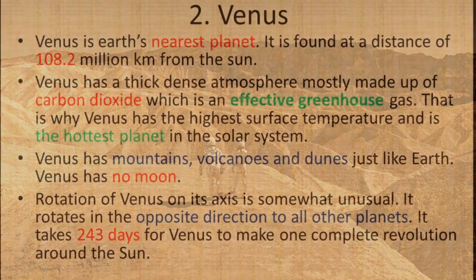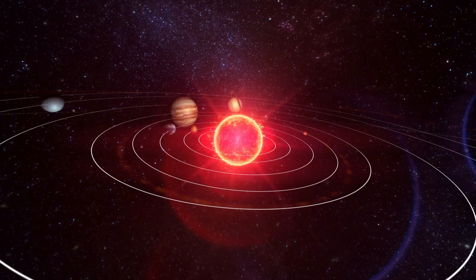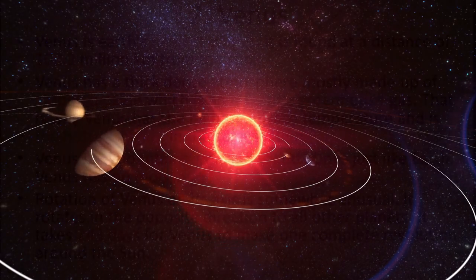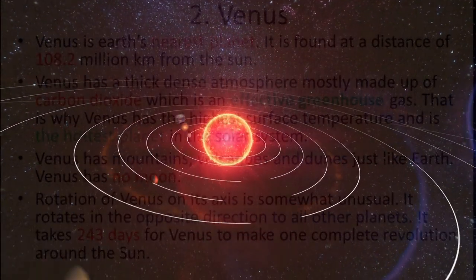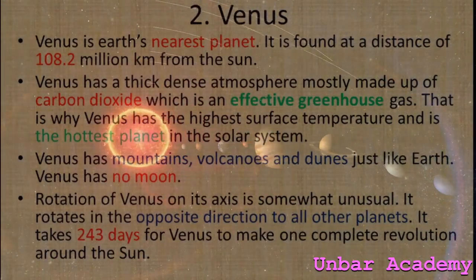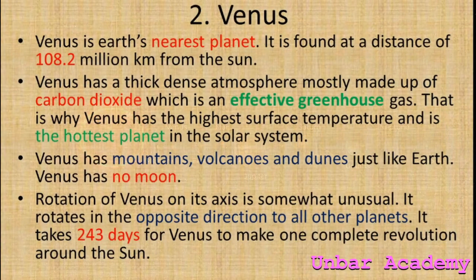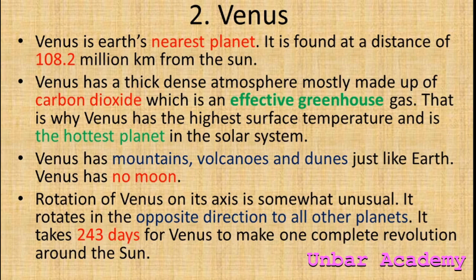The rotation of Venus on its axis is somewhat unusual. It rotates in the opposite direction to all other planets. It takes 243 days for Venus to make one complete revolution around the Sun.